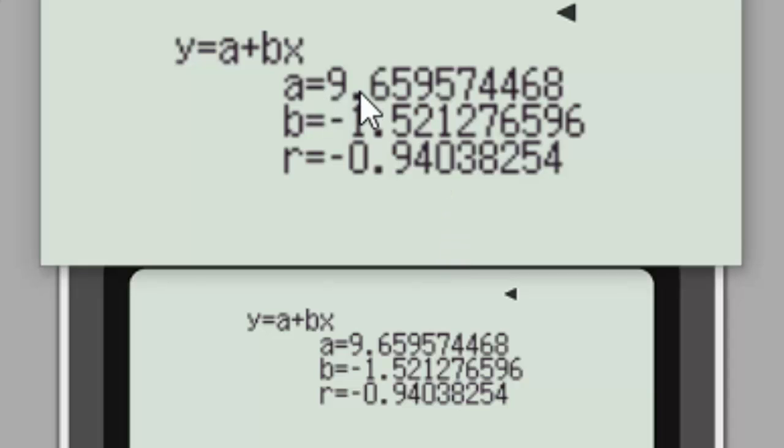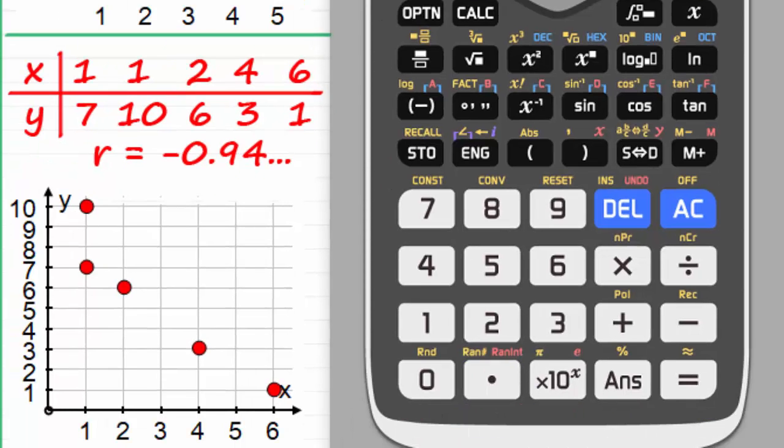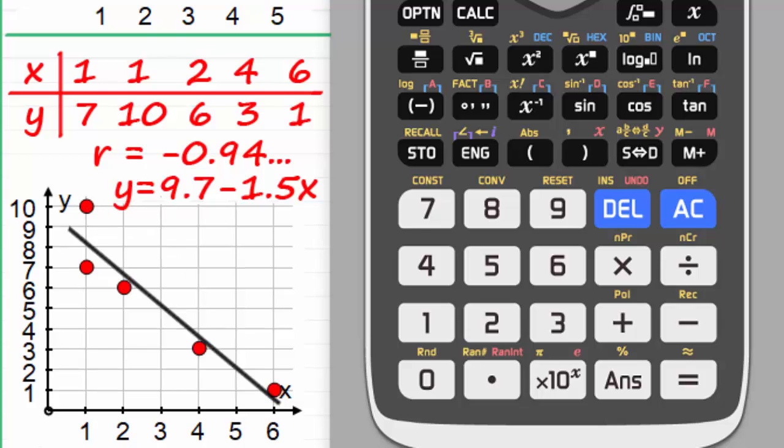If we took these values for a and b, put them into our equation of the form y equals a plus bx, we get the line of best fit. Rounding those values for a and b up to one decimal place, we get this as our straight line: y equals 9.7 minus 1.5x. If you take a couple of values for x and work out the equivalent y values, plot those points on, you'll get a line of best fit something like this.